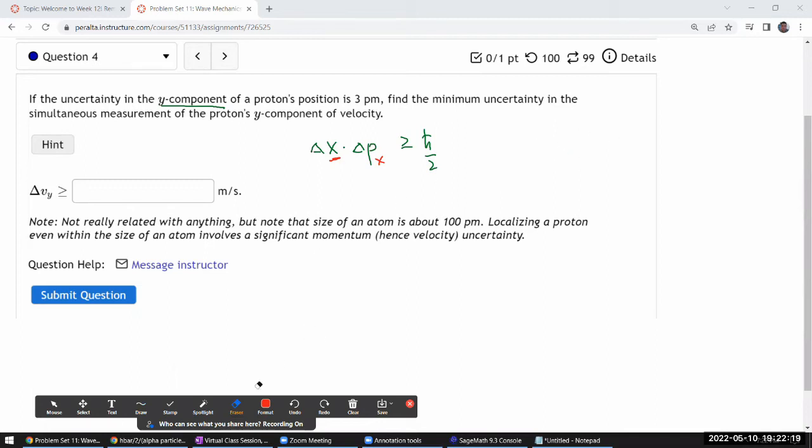So that's why the question is rather particular about specifying uncertainty in the y component of the position is 3 picometer, and it's asking for the minimum uncertainty in the simultaneous measurement of the y component of velocity. If we had asked for x component of velocity, I could have said zero, it could be arbitrarily precise.